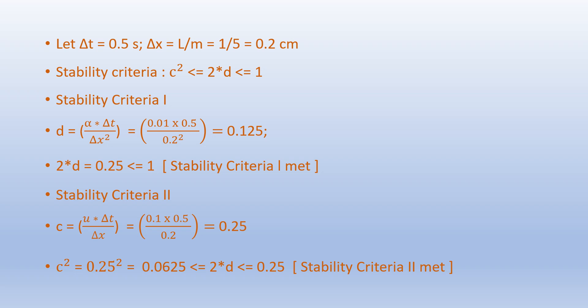Setting delta_t equals 0.5 seconds and delta_x equals L/m equals 1/5 equals 0.2 centimeter, we verify the stability criteria C² ≤ 2D ≤ 1. The diffusion number D equals 0.125, and 2D equals 0.25 which is less than 1, so the right-hand side stability criterion is met. The Courant number C equals u·delta_t/delta_x equals 0.25, and C² equals 0.0625, which is less than 2D equals 0.25, so the left-hand side stability criterion is also met.